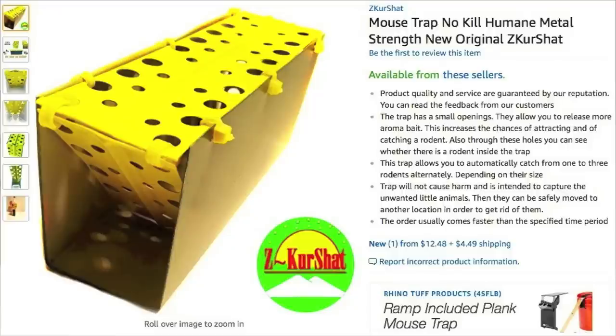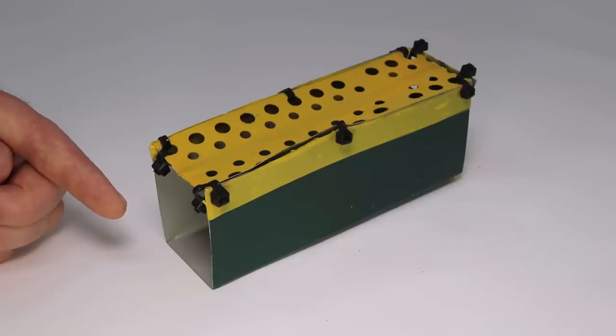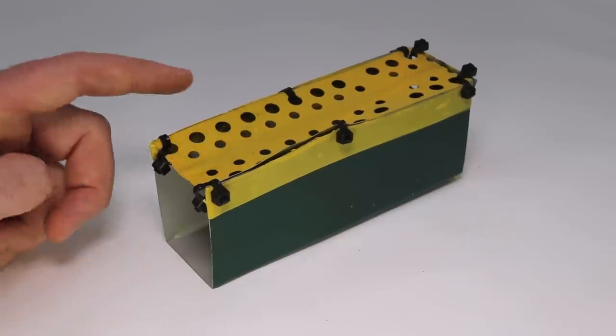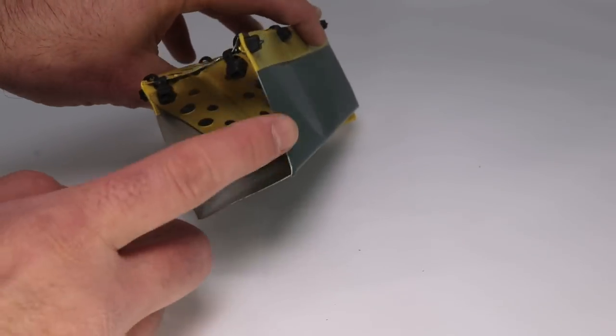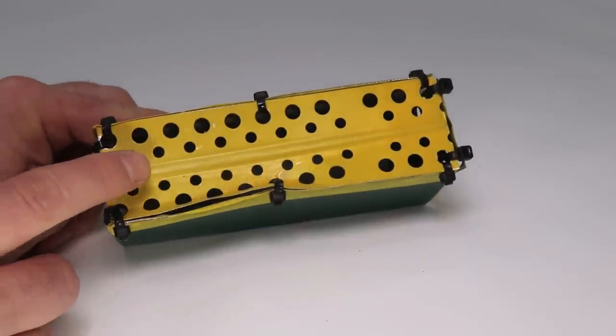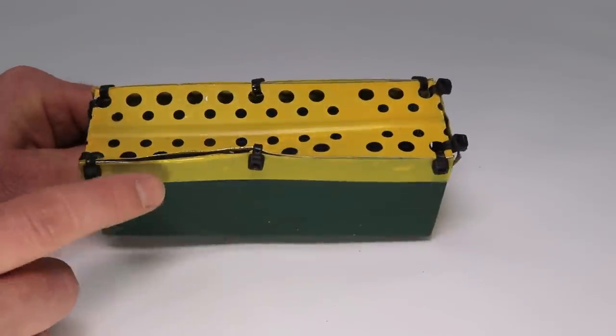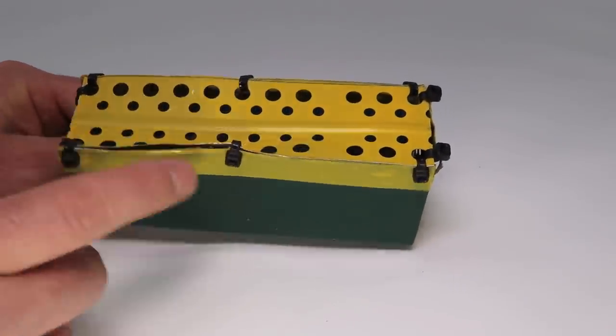The ad looked pretty good but when I received it in the mail I was really disappointed with the quality. It was damaged in shipping. It came in a soft package and the body's made out of thin sheet metal bent into a U. The lid is a piece of metal with holes in it covered in yellow tape and it's attached with zip ties all over the place.